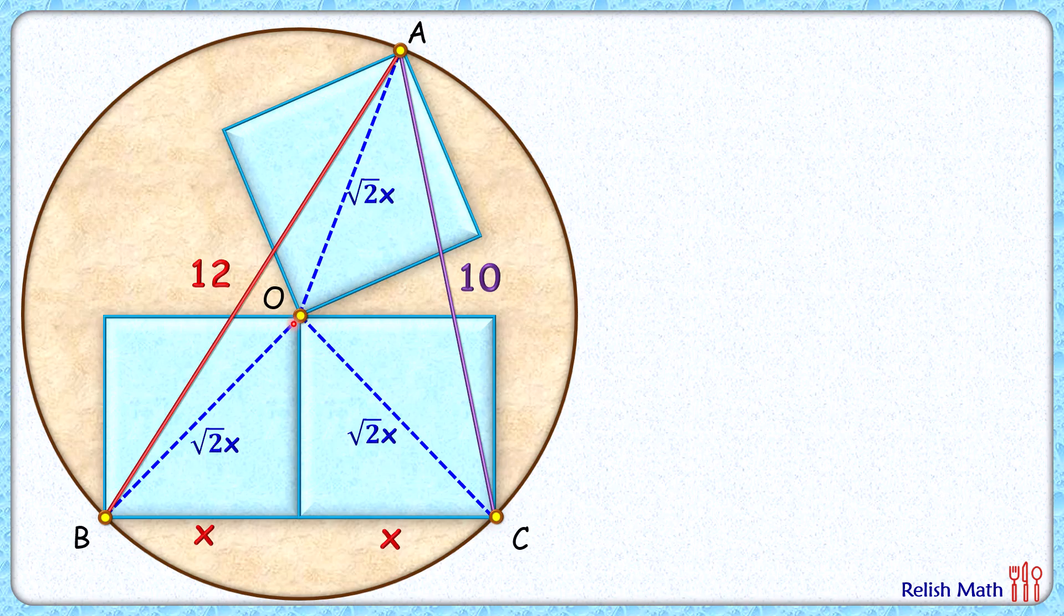If you observe, point O is equidistant from point B, C and A on the circumference. Thus point O is the center of the circle.